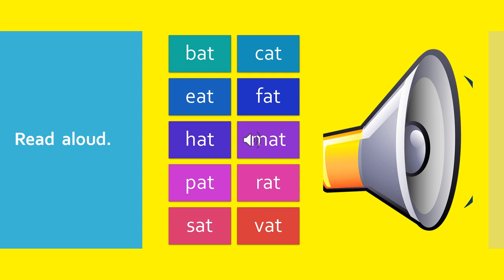Read with me children. B - At - Bat. K - At - Cat. F - At - Fat. H - At - Hat. M - At - Mat. P - At - Pat. R - At - Rat. M - At - Mat. B - At - Bat. R - At - Rat. S - At - Sat. V - At - Vat.